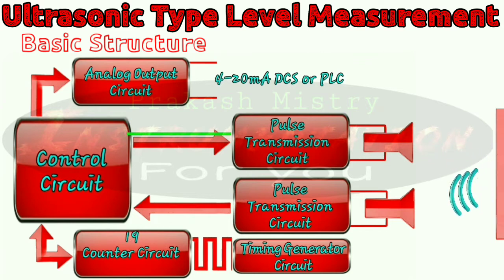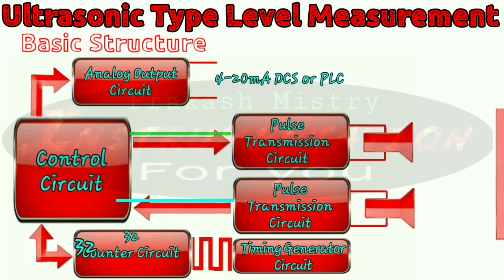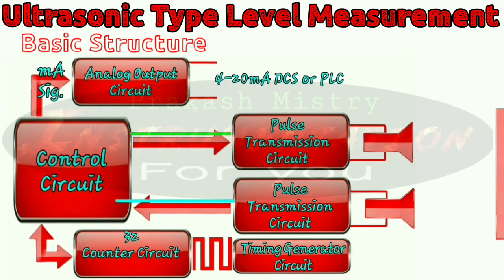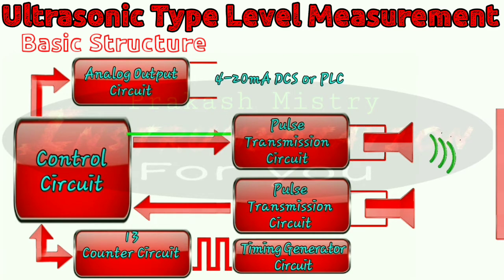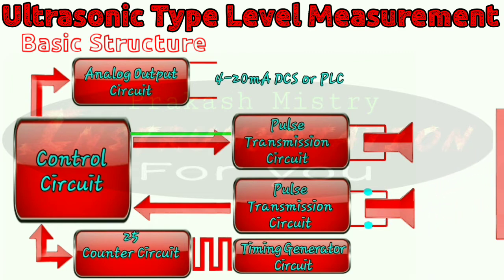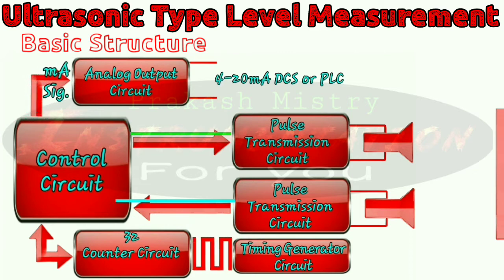This time delay is proportional to the level of the product. If the time delay is short, then the level is high; if the time delay is high, the level of the tank is low. The level is finally converted to a 4 to 20 mA signal. A 4 mA signal indicates 0% level and a 20 mA signal indicates 100% level. This 4 to 20 mA output signal carries the level data and can be transmitted over a long distance to process control devices such as DCS or PLC.